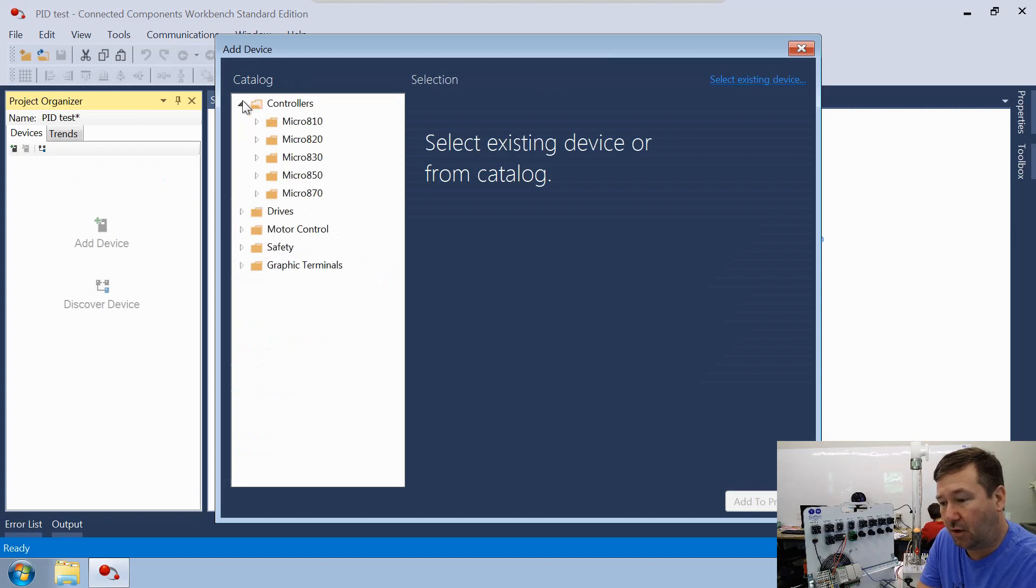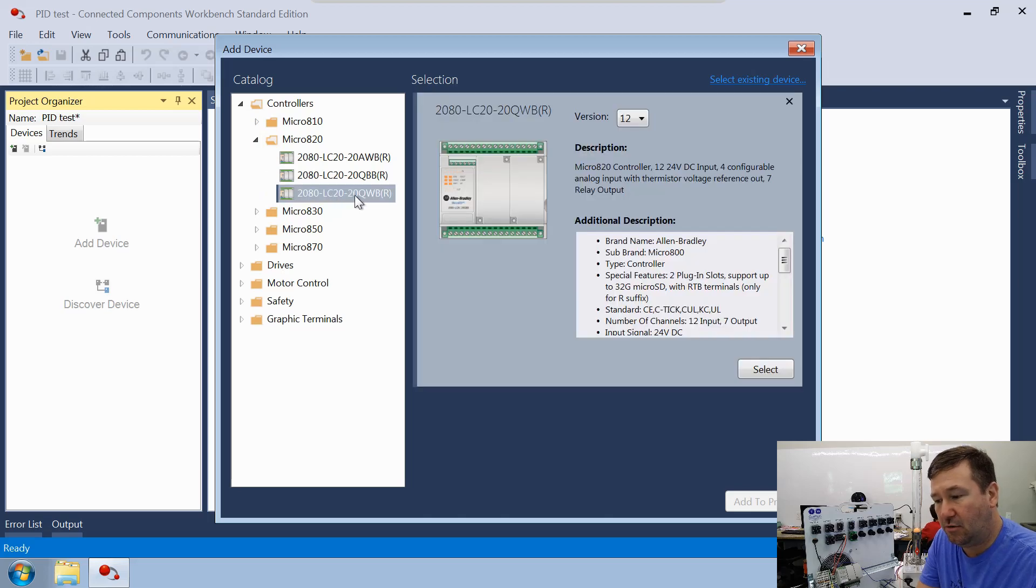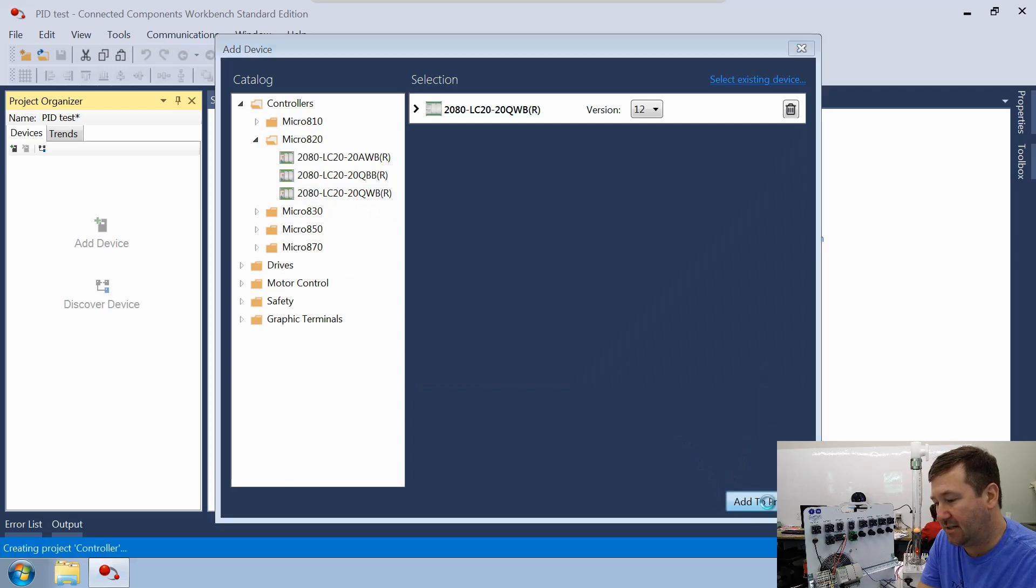And we're going to go to controllers, Micro 820 and we have a 2080-LC20-20QWB. We'll select it and click add to project.